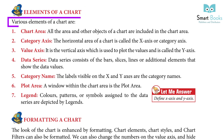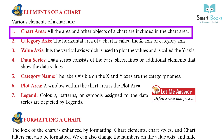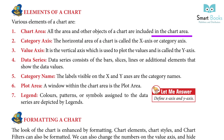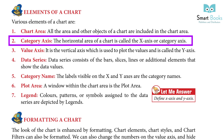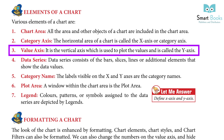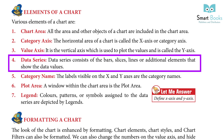Elements of a Chart. Various elements of a chart are: 1. Chart Area — all the area and other objects of a chart are included in the chart area. 2. Category Axes — the horizontal area of a chart is called the X-axis or Category Axes. 3. Value Axes — the vertical axis used to plot the values, called the Y-axis. 4. Data Series — consists of the bars, slices, lines, or additional elements that show the data values.